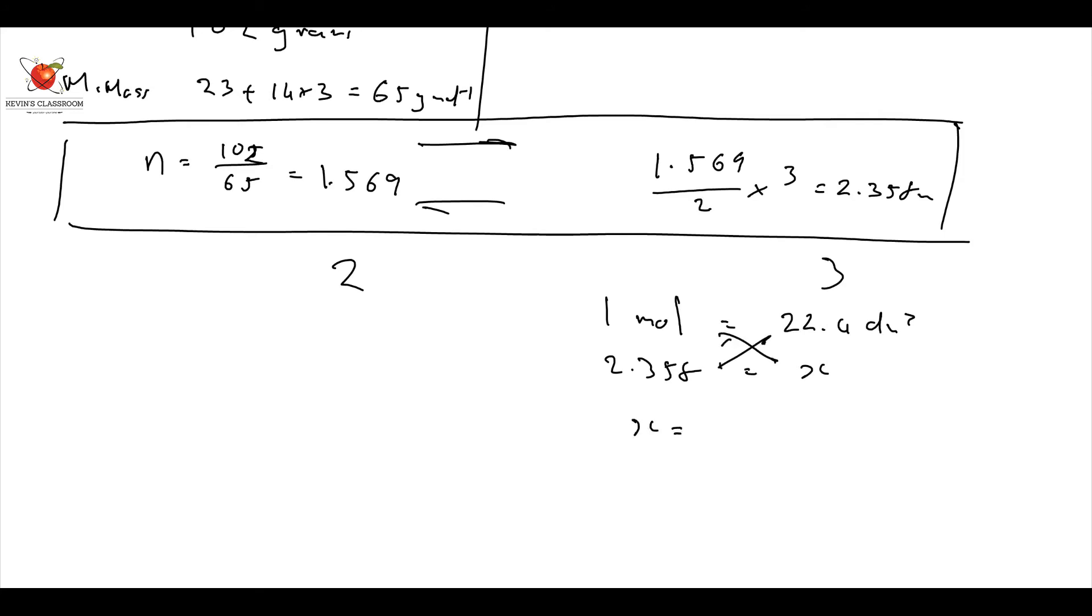So X, 1 times X is going to be equal to 22.4 times 2.358, which is going to give me 52.73. 52.73 liters or cubic decimeters of gas at STP.